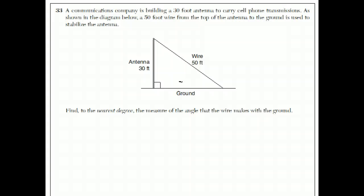The communications company is building a 30-foot antenna to carry cell phone transmissions. As shown in the diagram below, here's the wire. And their question is, what is the angle that the wire makes with the ground? So this is the angle we're looking for. This is a, because this is a right angle, we could use trigonometry. The sides of this triangle that we know in relation to this angle, the antenna, the 30 is the opposite. It's opposite this angle, and the 50 is the hypotenuse.